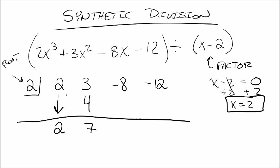Under the line, I multiply. 7 times 2 is 14. 14 plus -8 is going to be 6. 6 under the line, multiply times 2 is 12. And then -12 plus 12 becomes 0.